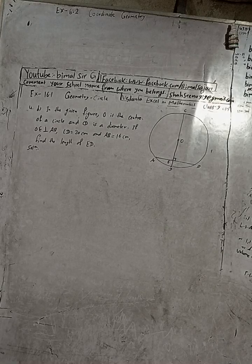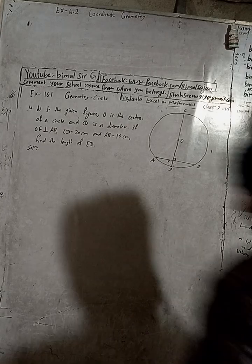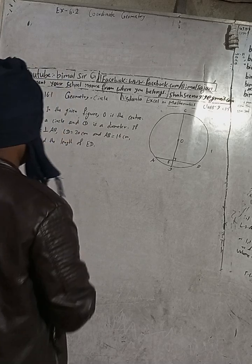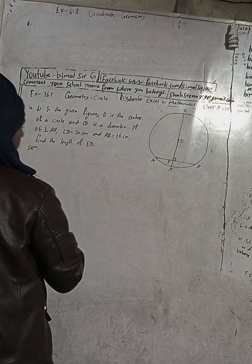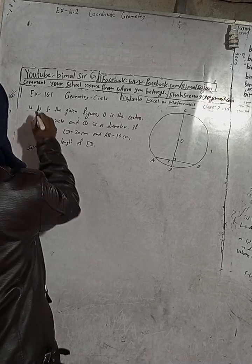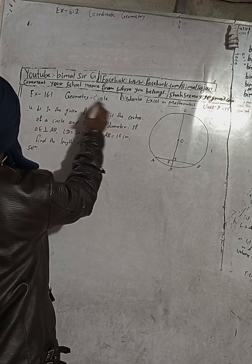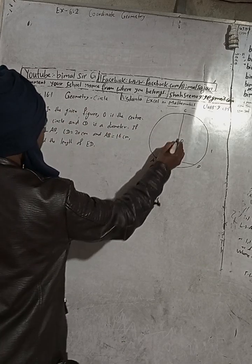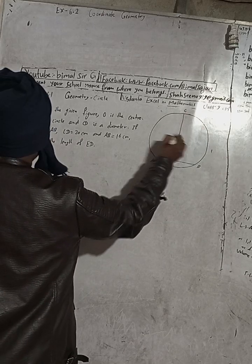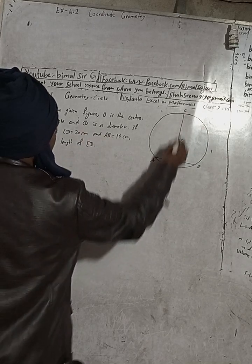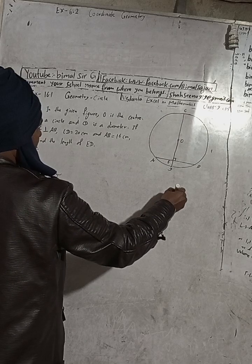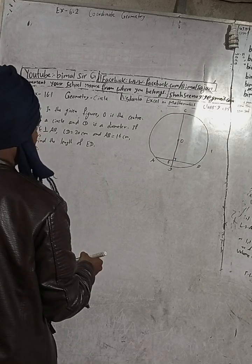This is question number 4d. If my writing is not clear, use your earphone and watch the video in 720p, which is the highest picture quality. Here is the question: Exercise 16.1, geometry circle. In the given figure, O is the center of a circle, and CD is a diameter because it passes through the center from one end to the other end of the circumference of the circle.